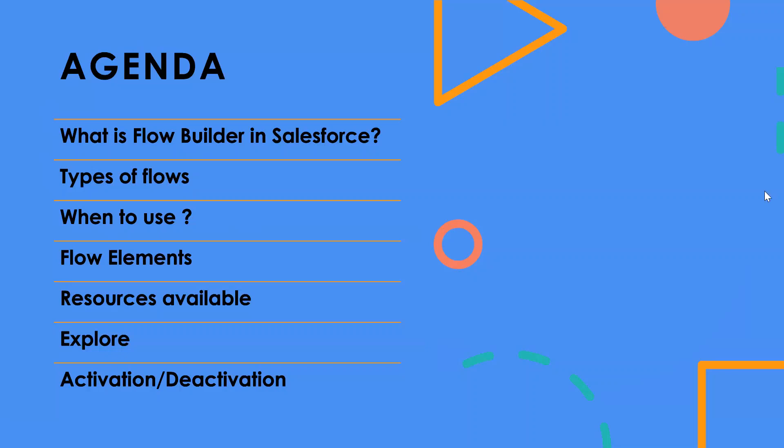The first question is: what is a Flow Builder in Salesforce? A flow is basically an application that automates any kind of complex business logic or process. In simple terms, it collects data and does something with that data — any kind of DML or processes that you want to execute can be done using Flow Builder.